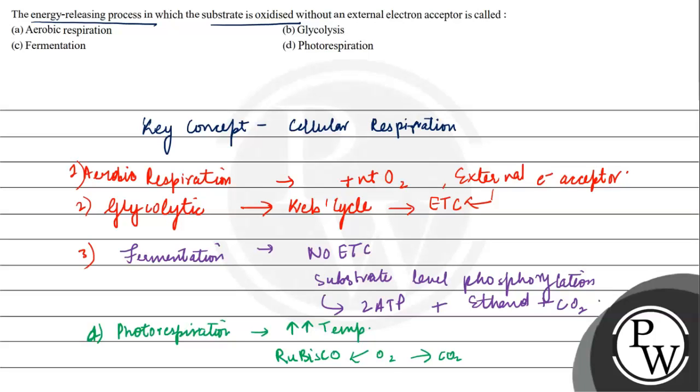Thus this was photorespiration. So the final answer will be, as we can clearly see, that fermentation is an energy releasing process in which the substrate is oxidized. The pyruvate is oxidized without an electron acceptor. Thus it is fermentation. Hope you all understood, all the best.